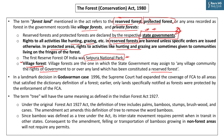State government can assign to any village community the rights of government over any forest already constituted as reserved forest, and that forest will be called a village forest. Private forest by definition would be on private lands. When Forest Conservation Act 1980 was legislated, it was understood that the law would be applicable to registered forests owned and governed by the government. But in the Godavarman case of 1996, the Supreme Court expanded the scope of Forest Conservation Act 1980 by taking the dictionary meaning of forest — so every forest will be covered under it, not only those owned and governed by the government.